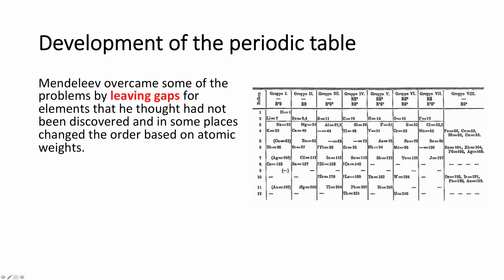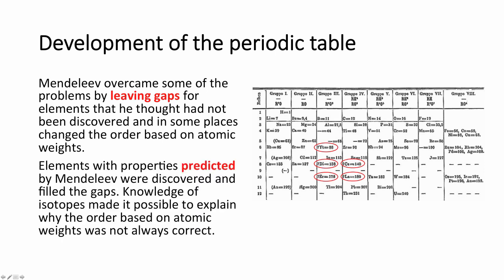Unlike other scientists, Mendeleev realised that not all elements had been discovered, and rather than put things in the next group just to fill the space, he left gaps so that elements could be in a group with similar characteristics and chemical properties. He was therefore able to make predictions about elements that had not been discovered yet, and these proved to be very accurate. When they were discovered years later, this gave a lot of weight to Mendeleev's use of the periodic table.